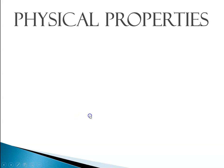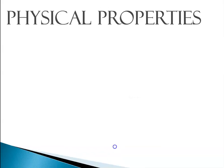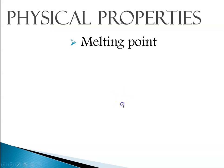We're going to start with physical properties. A physical property is any quality or condition of a substance that can be observed or measured without changing the substance's composition. An example of a physical property is the melting point. You can melt an ice cube and refreeze it, so melting point is physical.